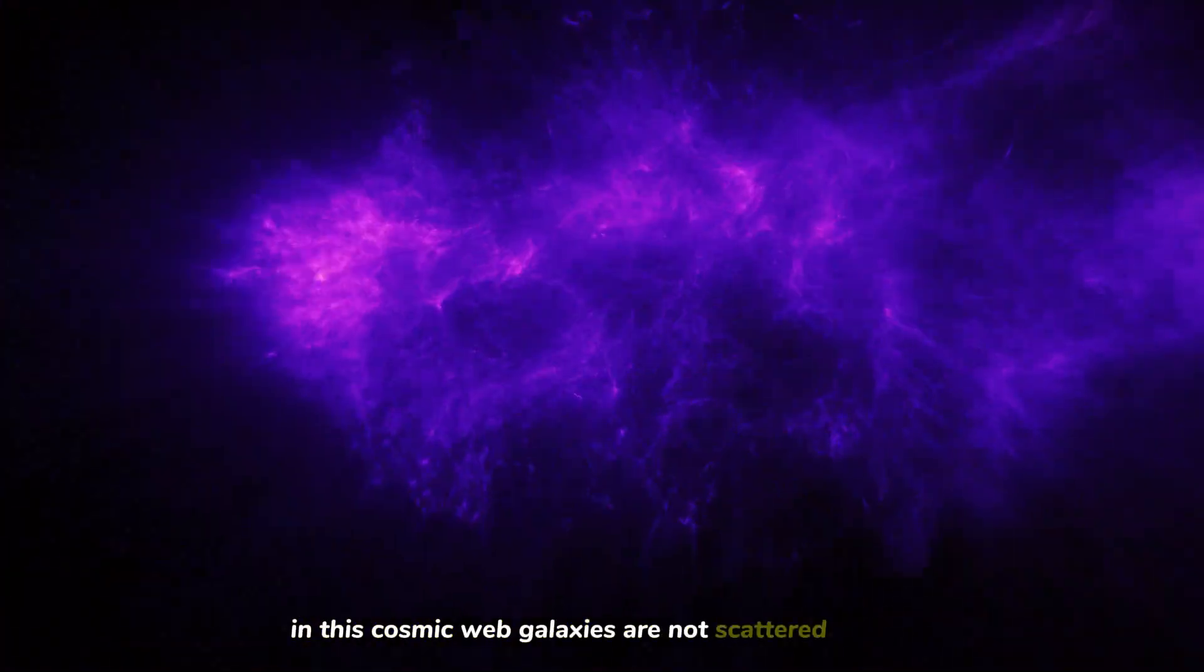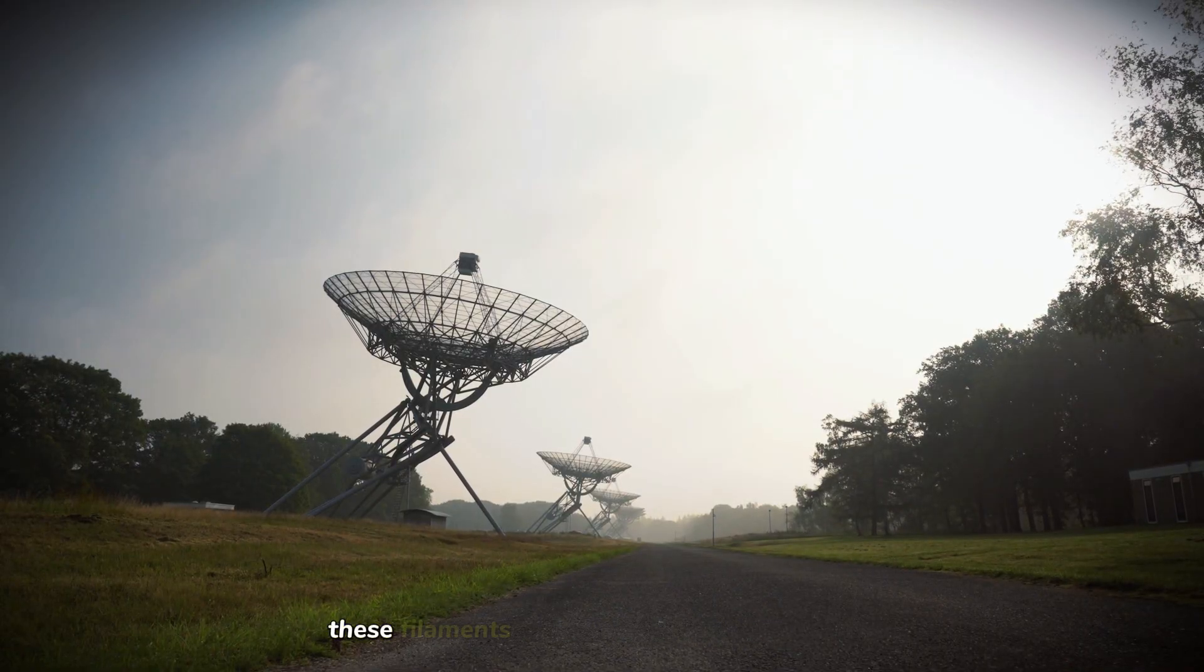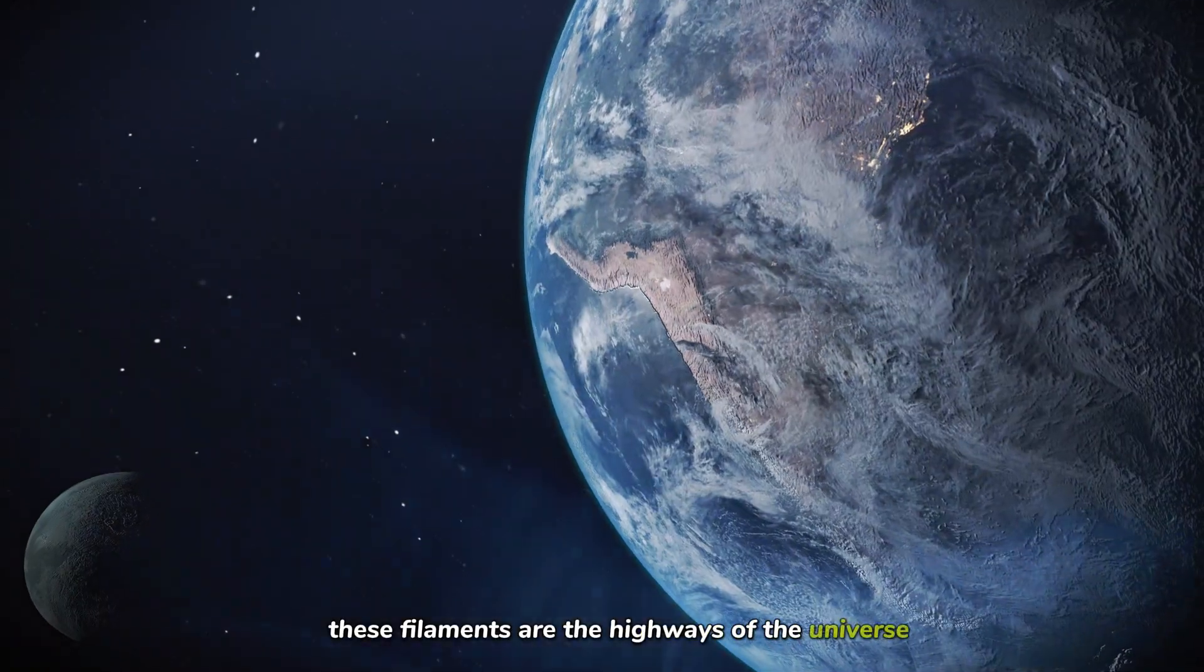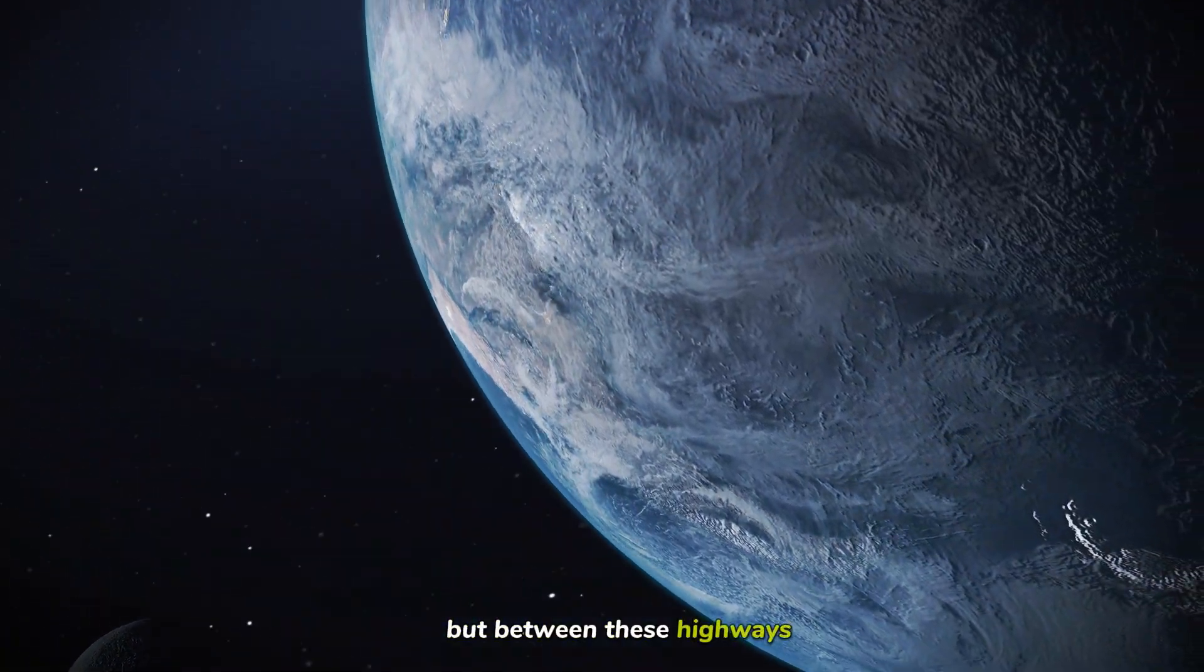In this cosmic web, galaxies are not scattered randomly. They cling together in long, thin threads called filaments. These filaments are the highways of the universe, blazing with the light of billions of stars. But between these highways, there are gaps.